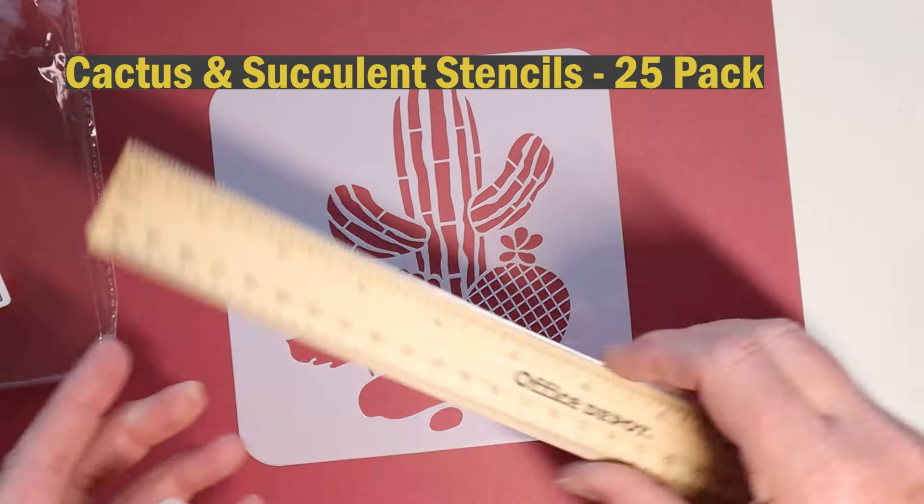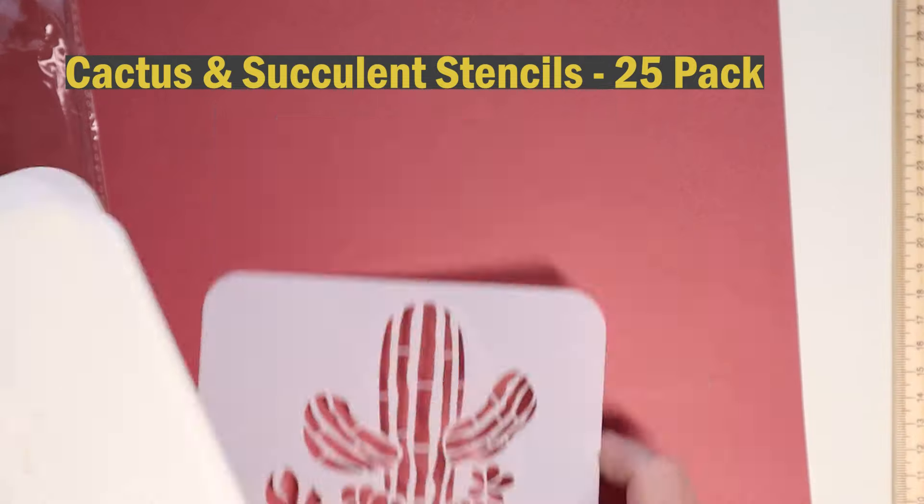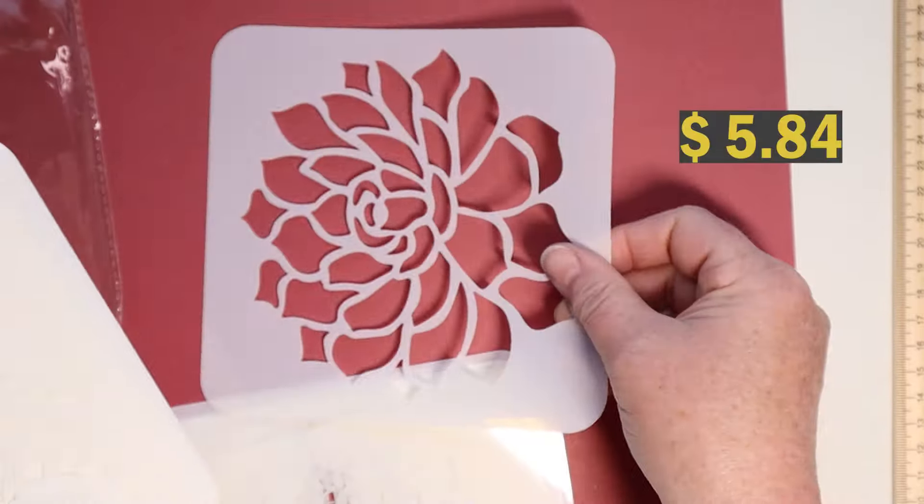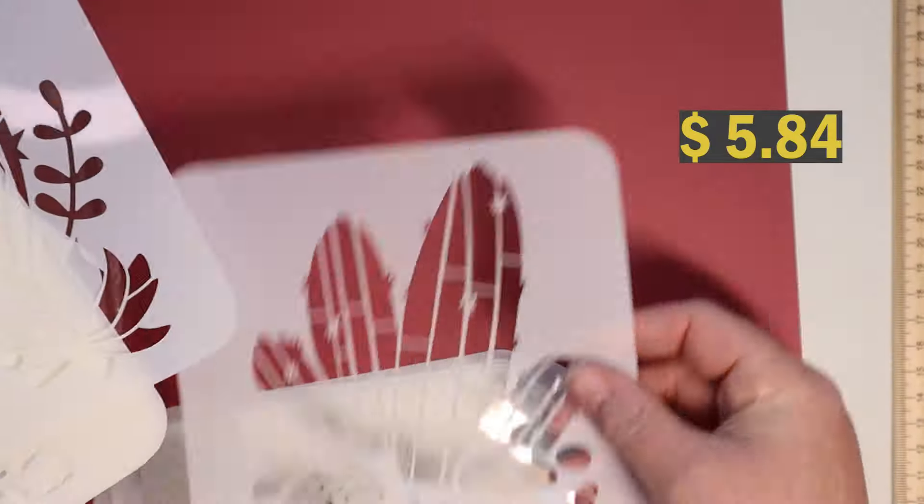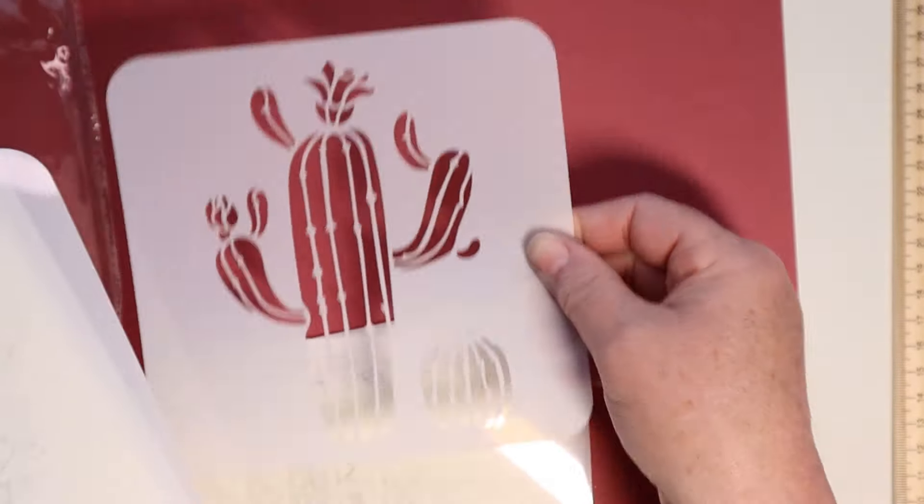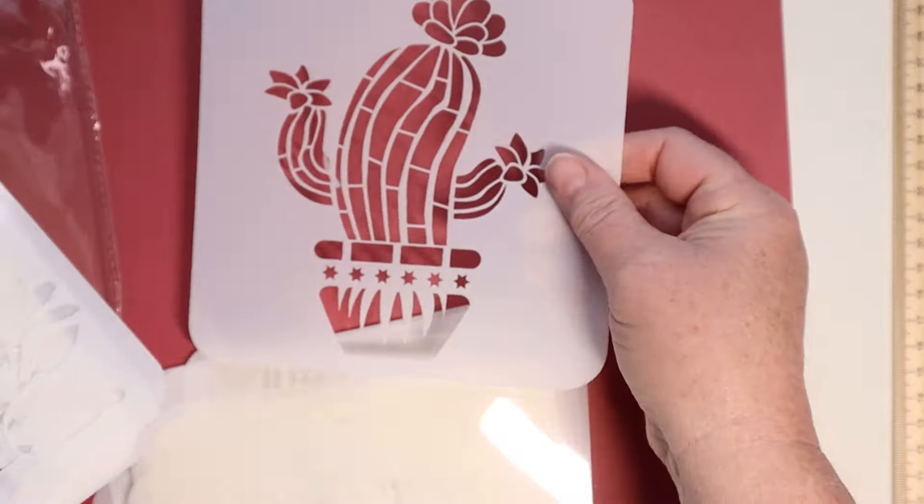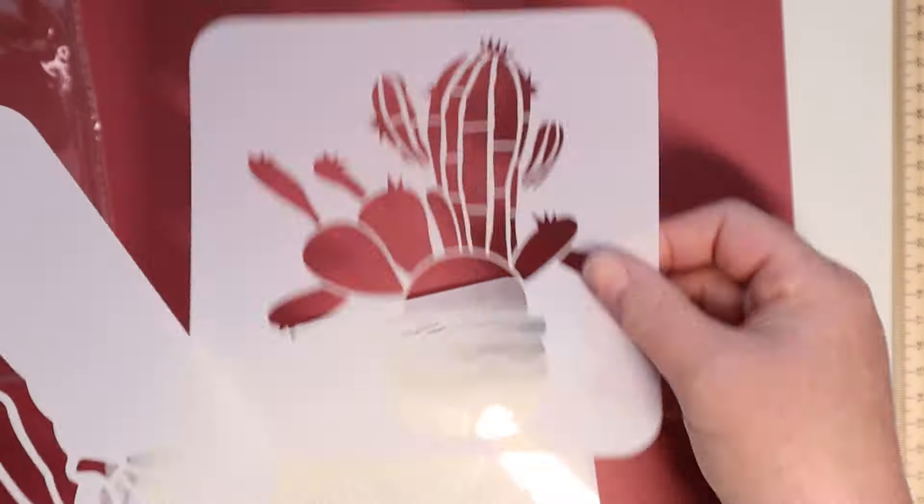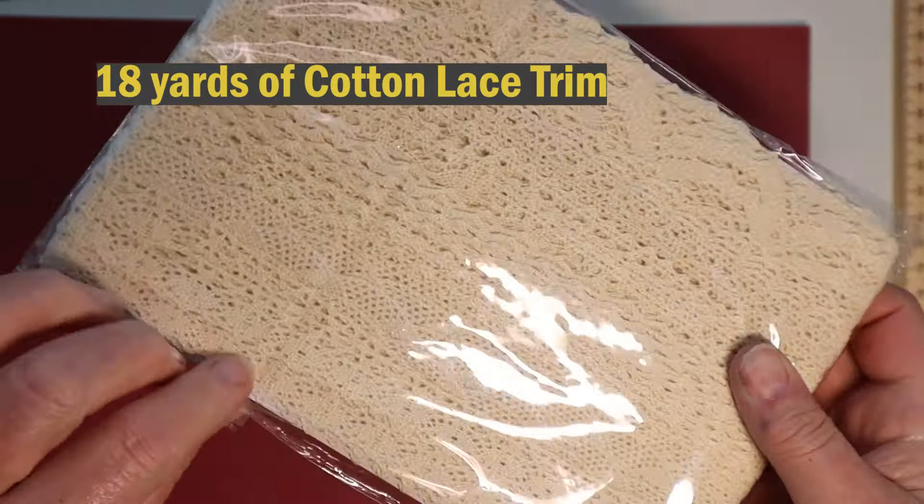Now I'm sure I had a project in mind when I bought these for life of me. I can't remember what it was, but there's 25 of these stencils in here. It's only $5.84 for 25 cacti and succulent stencils. You see that one with a skull in it. I'm definitely going to be using that one on some sort of project. These are really cute stencils and I'll be figuring out some projects with that.